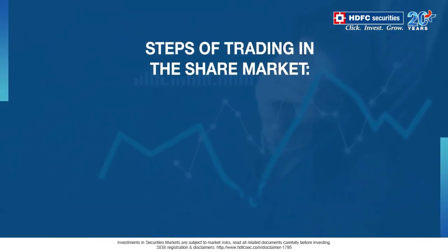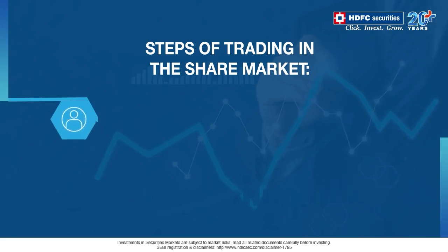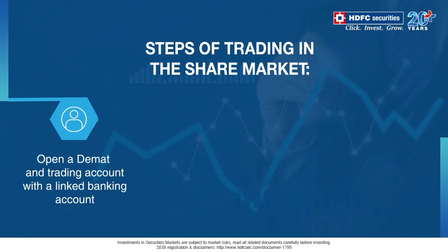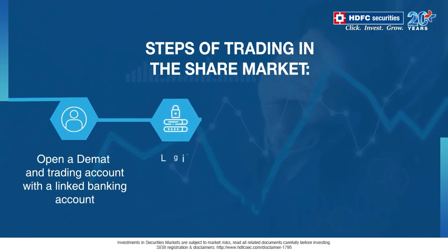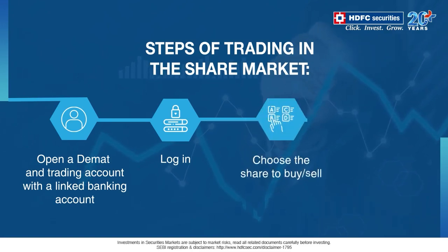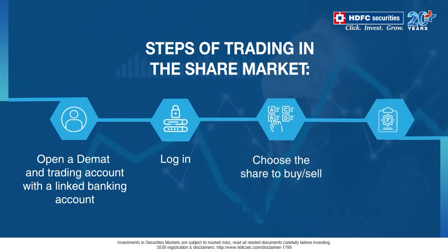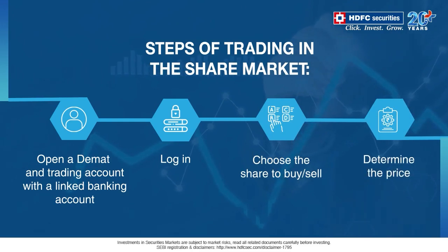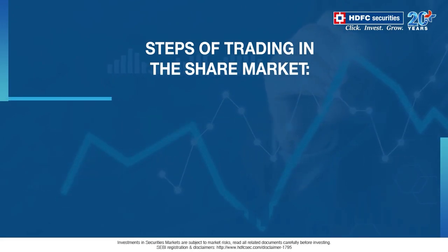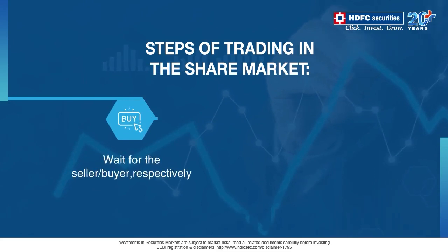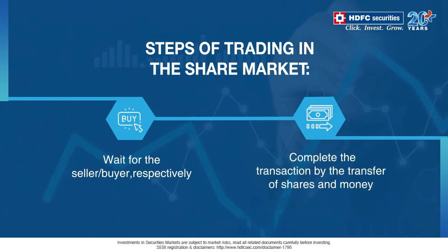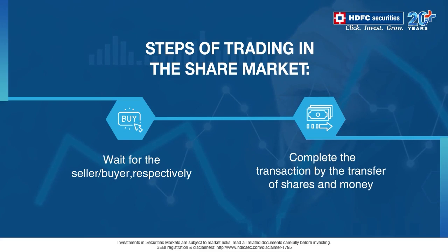Let us now go through the final steps of trading in the share market. The first step, as discussed earlier, is to open a DMAT and trading account with a linked bank account. The next step is to simply log into the trading account and choose the share you want to buy or sell. Next, you must add funds to your trading account. While transacting, you choose the price at which you want to buy or sell a particular share. Once your price gets accepted by a seller or a buyer, your transaction gets completed by transferring shares and money.